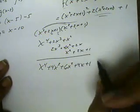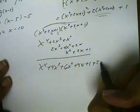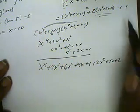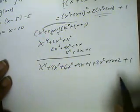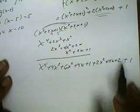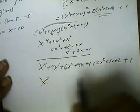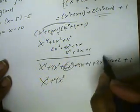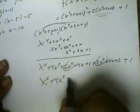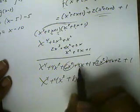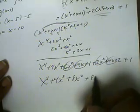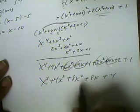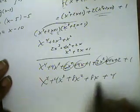Then we distribute the 2 times the inner function, which gives us 2x squared, 4x, and plus 2. And we bring down the plus 1. Now let's collect like terms. We have x to the 4th, only one x cubed term so that stays as 4x cubed, the x squared terms combine to give 8x squared, the x terms — 4x and 4x — make 8x, and 1 plus 2 plus 1 makes 4. So this is the function f composed with f: x to the 4th plus 4x cubed plus 8x squared plus 8x plus 4.